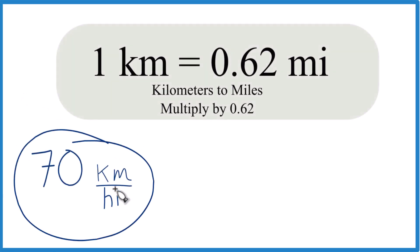Let's convert 70 kilometers per hour to miles per hour. So 70 kilometers per hour to MPH. How does that work?